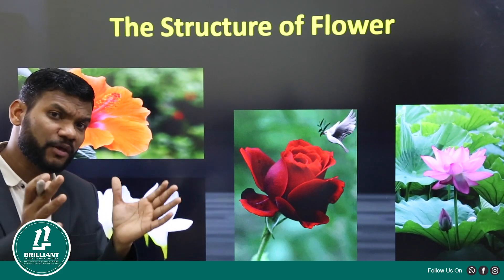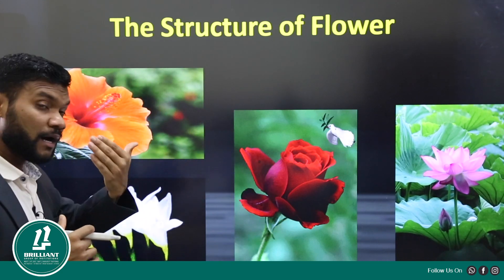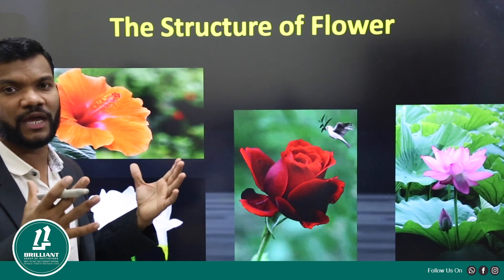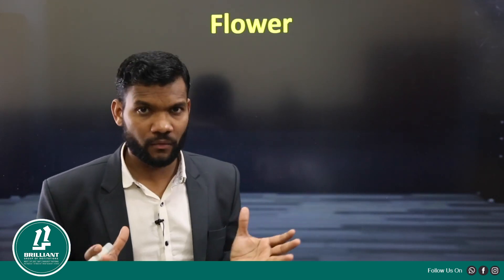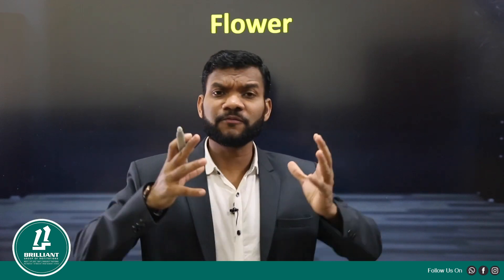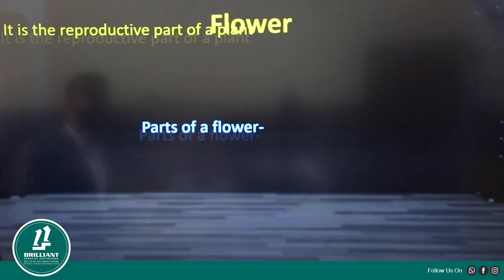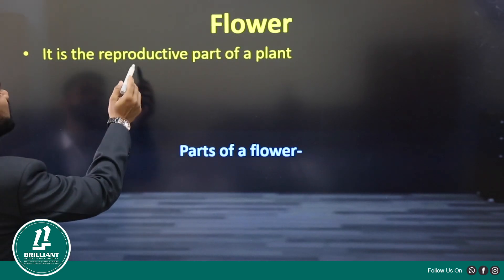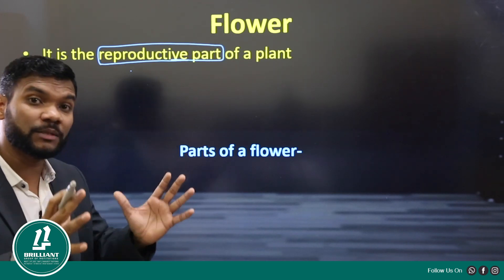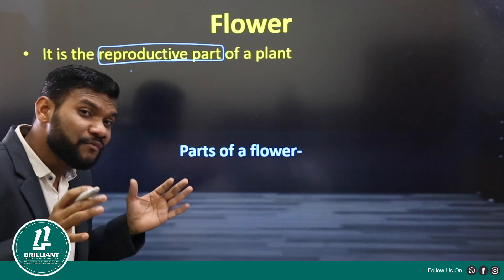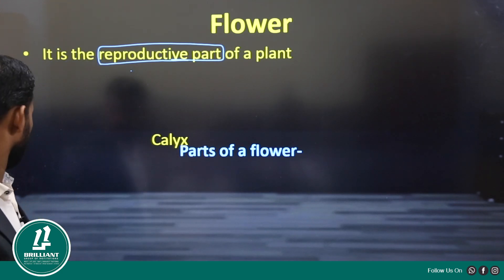Before we discuss their role, we are going to discuss what are the different parts of a flower. Flower is the reproductive part of a plant — that is the most important thing. Flower is the reproductive part, meaning it helps in reproduction. Let us see what are the parts of a flower.